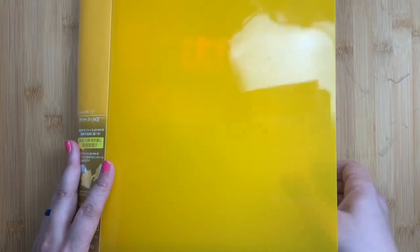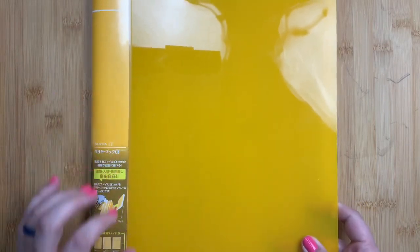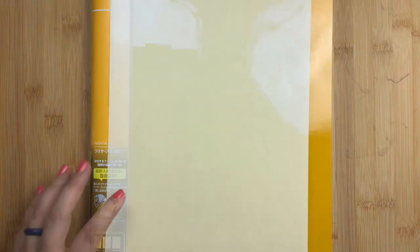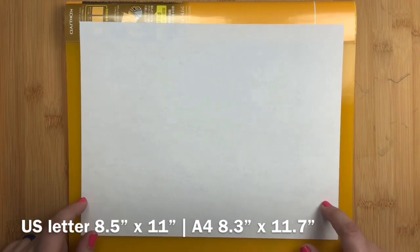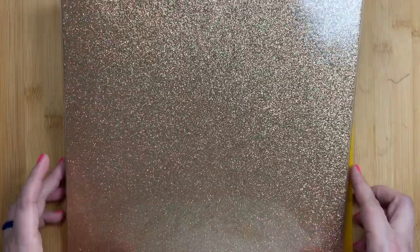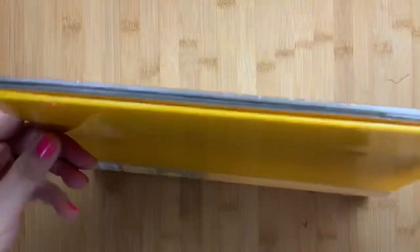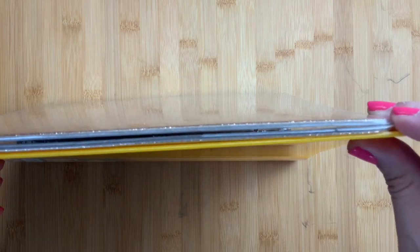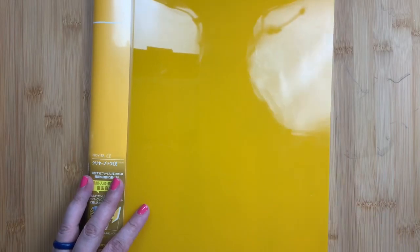This clear book is from Kokyo and it is an A4 size. It is slightly larger than a US letter piece of paper, but pretty much the A4 paper is about the same size as letter. The book itself is pretty similar in size to a binder that you would get at Staples or OfficeMax to hold your letter size papers. It's just a smidge taller, but the actual width is the same.